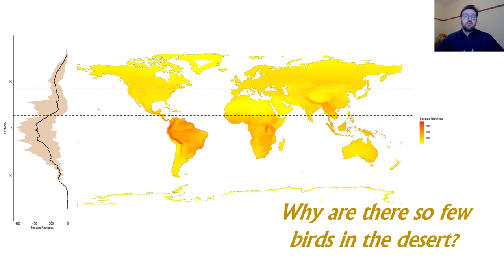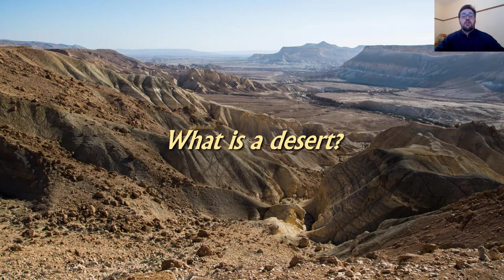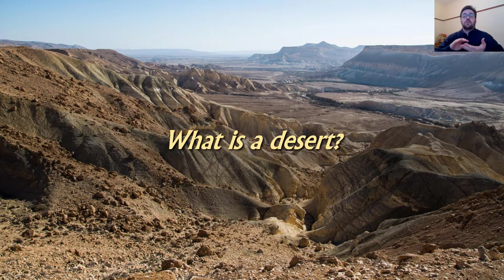To address that question, the first thing we have to do is consider what exactly is desert. This is the image that comes to my mind when I think of the desert — these are the deserts of Israel where I'm from. The thing that makes a desert a desert is very low precipitation and very low availability of water in general. This has all sorts of effects on what life in the desert is like. Partly because of the low cloud cover, deserts often experience really extreme temperatures, and depending on the location and the season, they can be either very hot during summer or during the day, or very cold during winter or during the night.